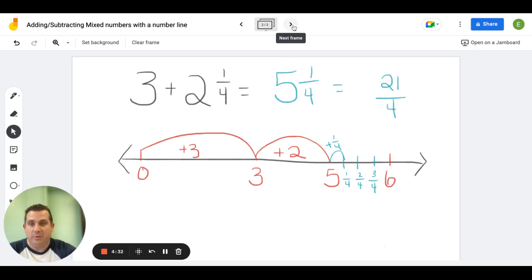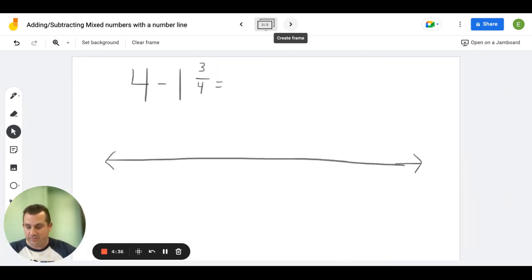Now I'm going to pull up on the screen our next equation, which is 4 minus 1 and 3/4. Once again, we know we have 4 wholes. We're subtracting 1 whole and 3/4 of a whole. So I'm going to start my number line how I always should - I'm going to start it at zero.